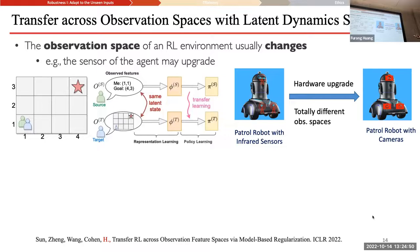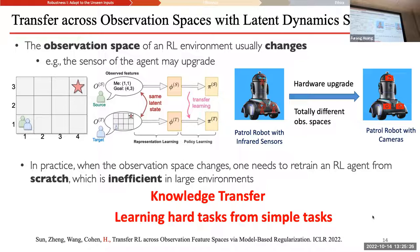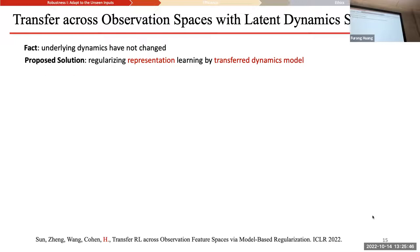This happens a lot — patrol robots upgrading from infrared sensors to cameras, or from cameras to 3D cameras. Rather than retraining the entire RL agent when upgrading to an advanced sensor, you could do knowledge transfer, using whatever you've learned from the simpler task to speed up learning of the harder task — a curriculum learning flavor. Because the underlying dynamics cannot change — the underlying laws of physics are still the same — the proposed solution is to regularize representation learning by transferring the dynamics model.